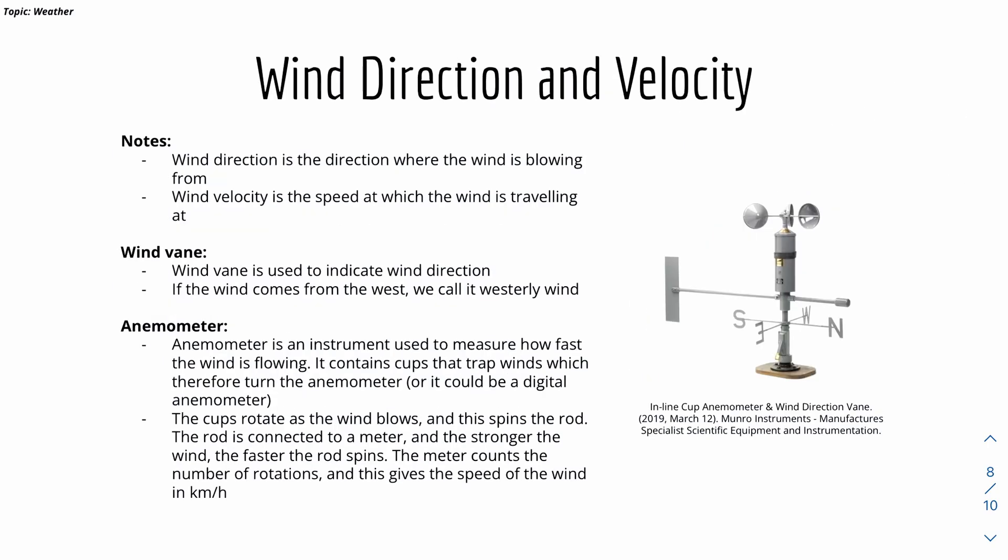Then we have wind direction and velocity. Wind direction is the direction at which the wind is blowing from. It's quite important where the wind is blowing from. Wind velocity is the speed at which the wind is traveling at.